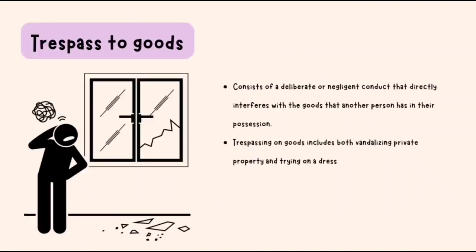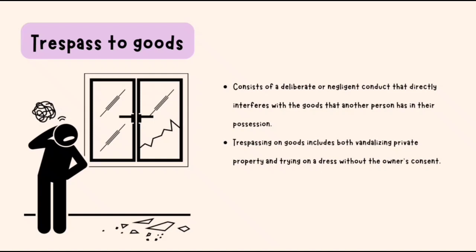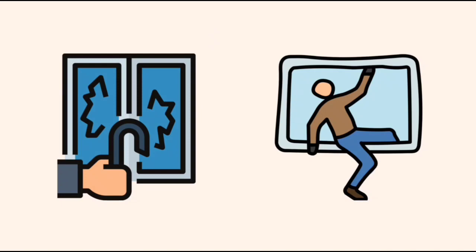Trespass to goods consists of a deliberate or negligent conduct that directly interferes with the goods that another person has in their possession. Trespassing on goods includes both vandalising private property and trying on a dress without the owner's consent. Even if no force was applied and no damage to the items occurred, a trespasser may still be held liable. Trespass liability may occur from moving another person's property or even by merely touching it.